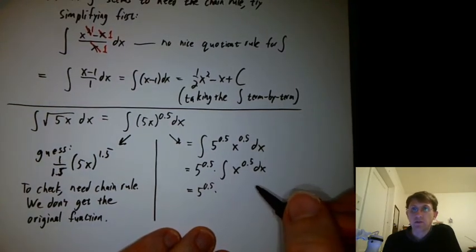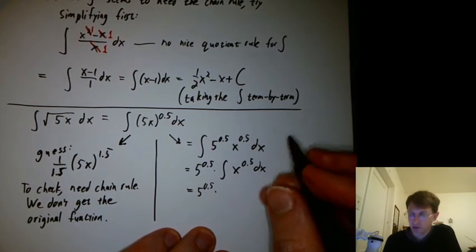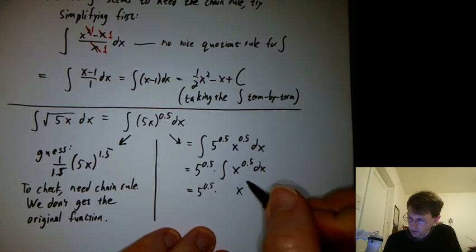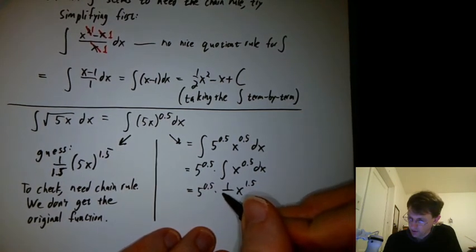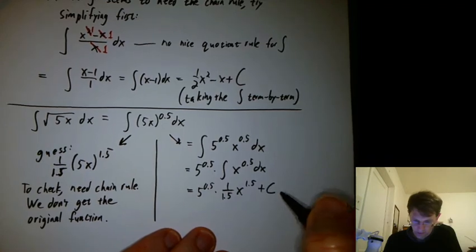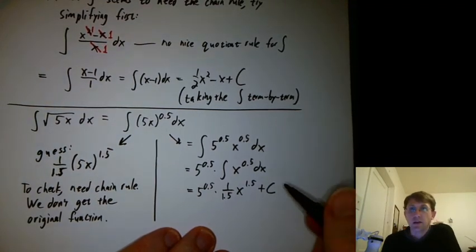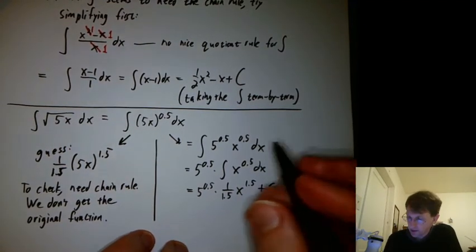What's the integral of x to the 0.5? It's x to the 1.5, 1 over 1.5. And it seems reasonable. How would you check it?